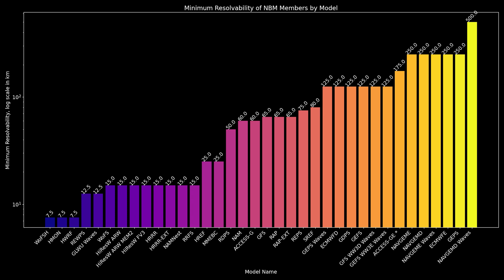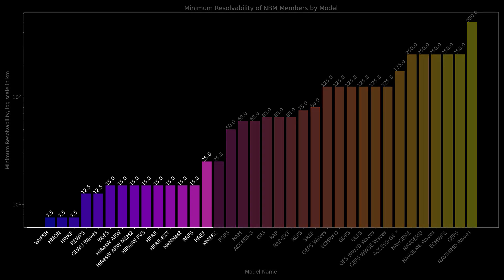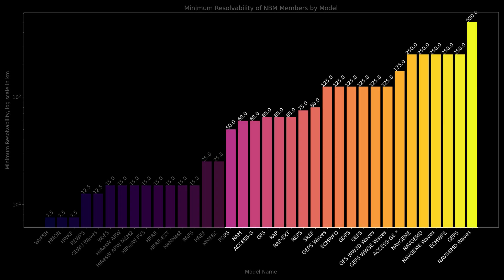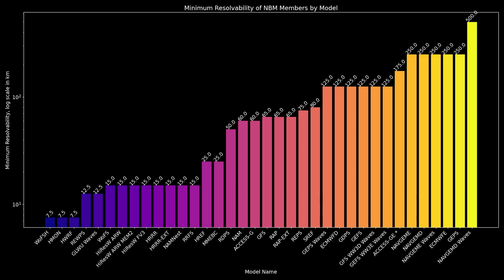The models contributing to the NBM on the far left of this graph may be able to resolve individual thunderstorms, but thunderstorms in the models on the right half of this graph may end up being represented as an MCS, something that could bias probabilities for related meteorological fields.